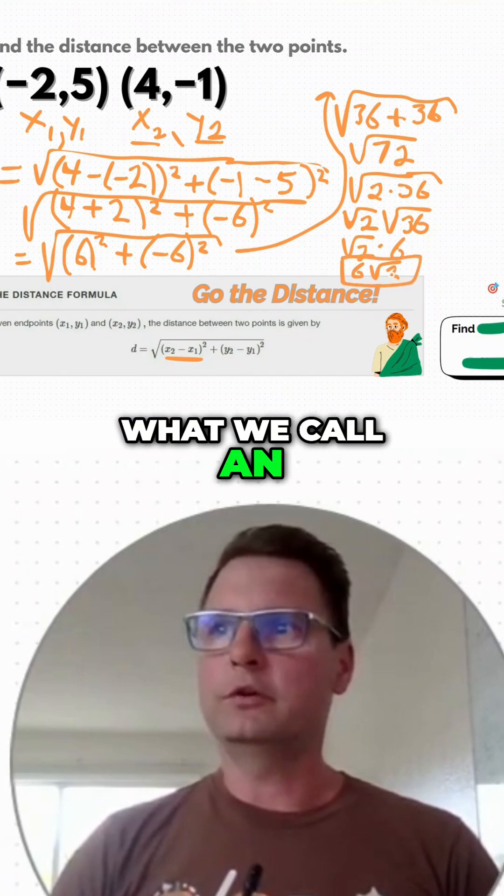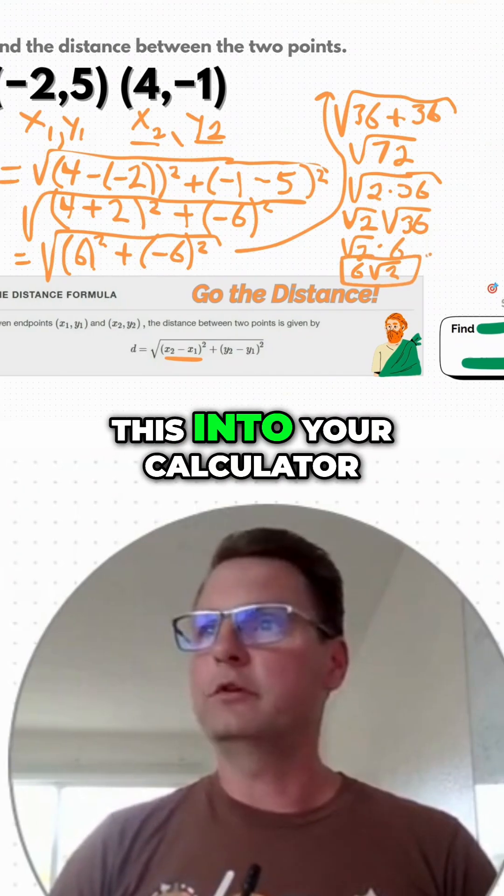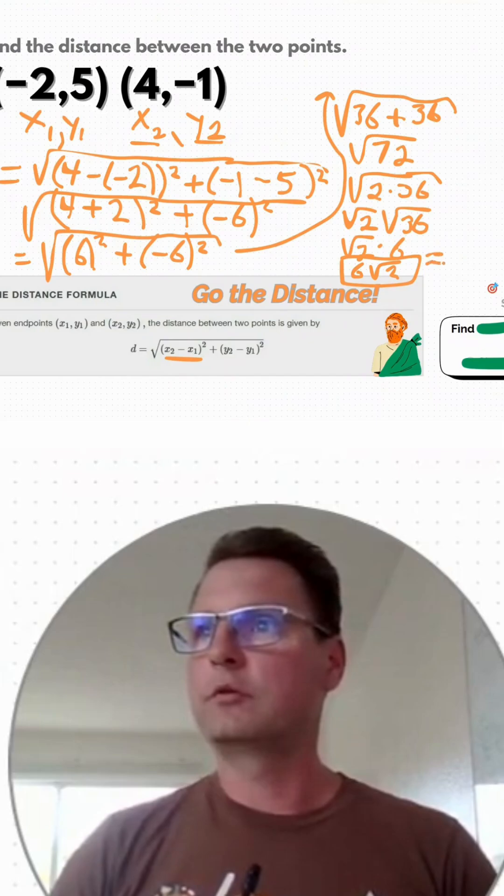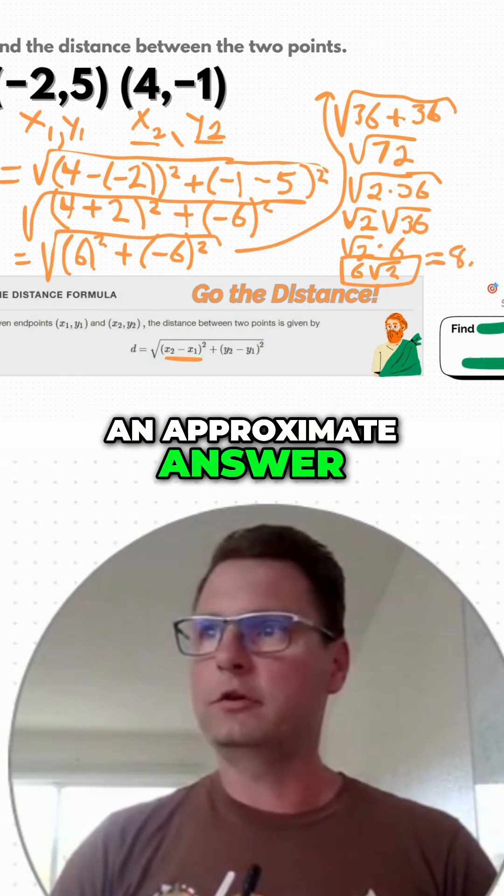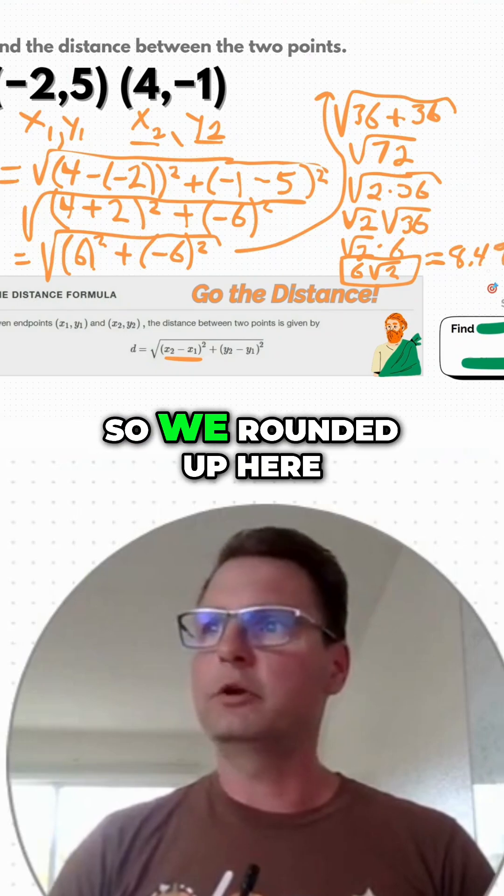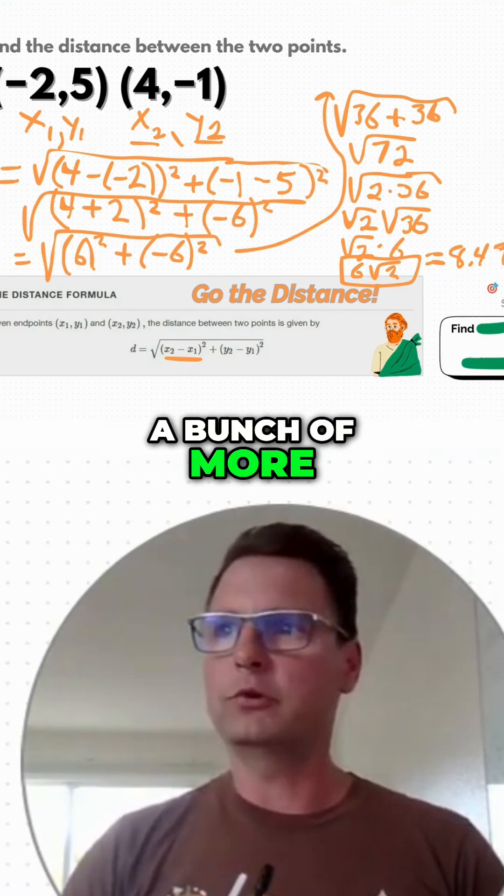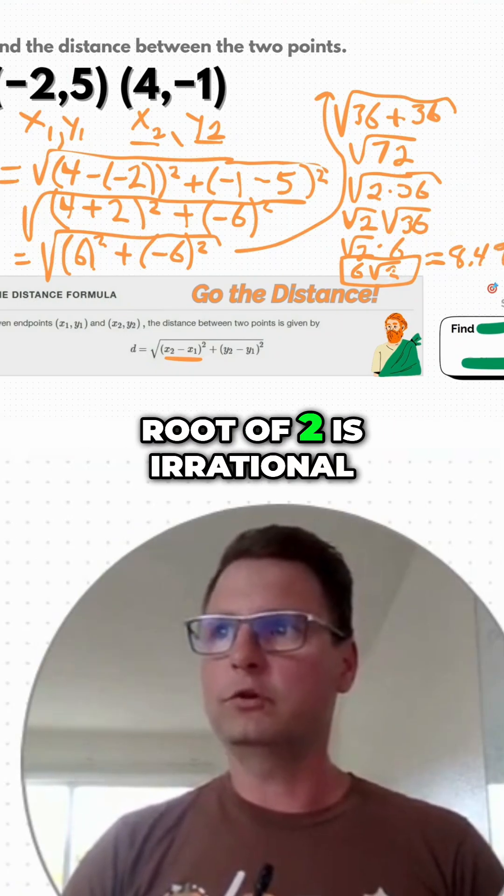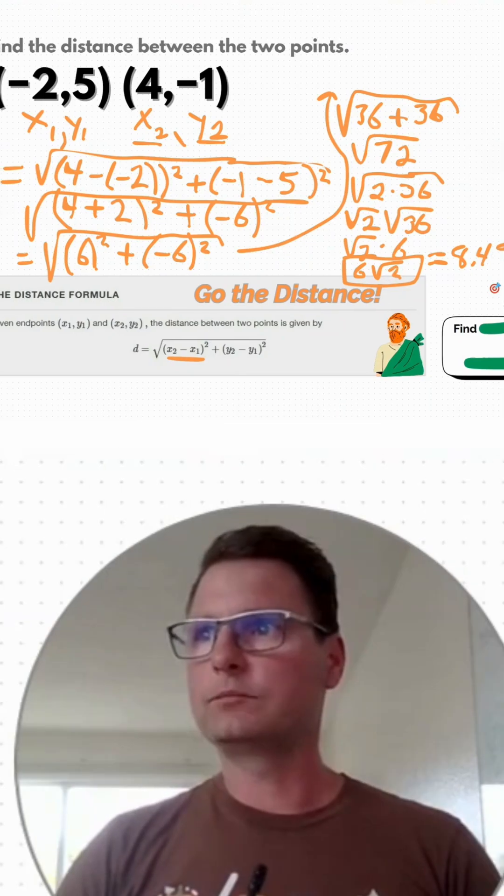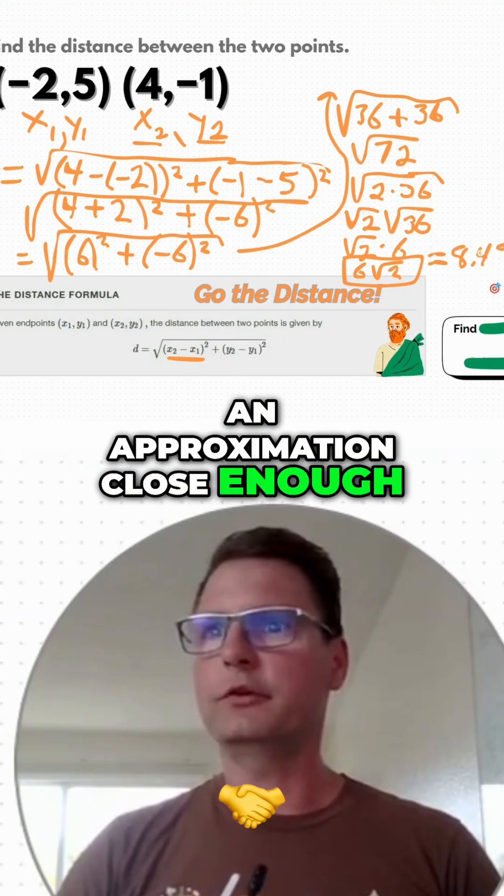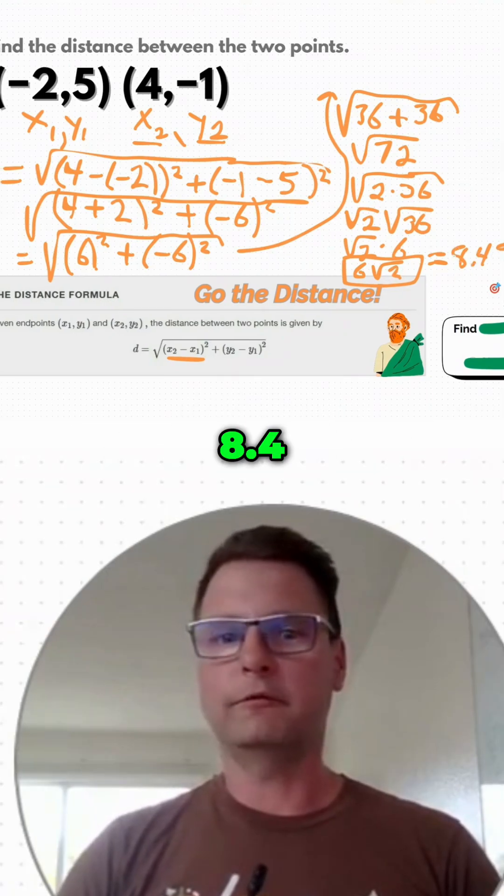And that's what we call an exact answer. But if you put this into your calculator, it's going to be an approximate answer. It's going to be 8.49. So we rounded up here. There's going to be a bunch of more decimal places because square root of two is irrational, but an approximation close enough guesses 8.49.